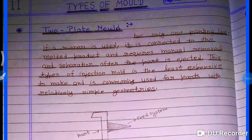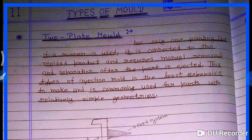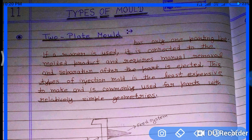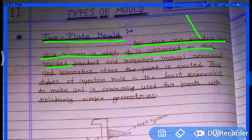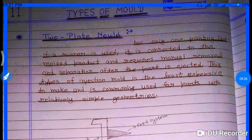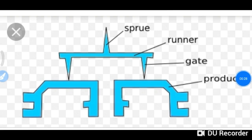There are two types of injection molds: the two-plate mold and the three-plate mold. The two-plate mold has only one parting line. If a runner is used, it is connected to the molded product and requires manual removal and separation after the part is ejected.